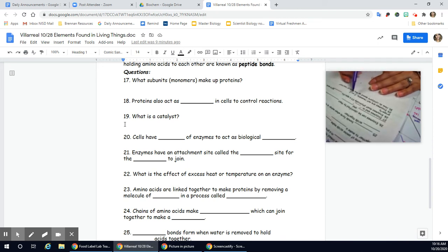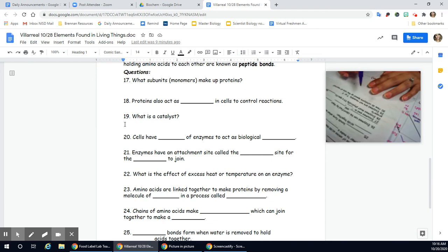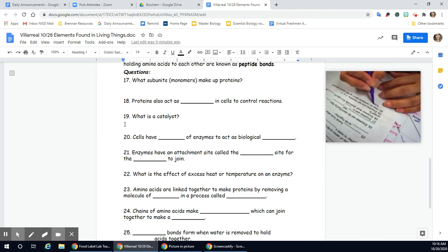28, enzymes must physically fit a specific blank to work properly. 29, enzymes are not reusable, true or false. And 30, how do catalysts speed up the rate of reaction? So we're using complete sentences, catalysts speed up the rate of reaction by this. So you have all of your answers in the reading. Double check your answers with the Master Notebook Scientist. Thank you for your time, and I'll see you guys in class.